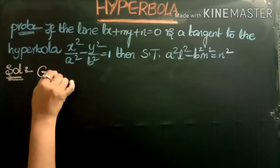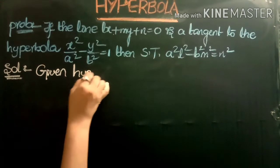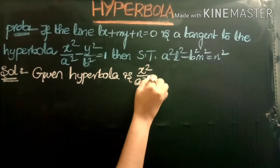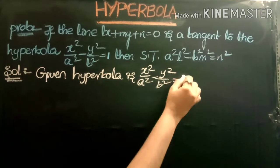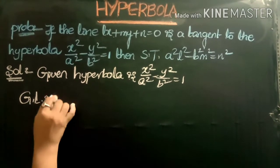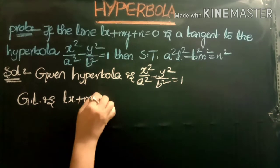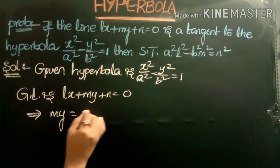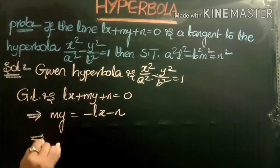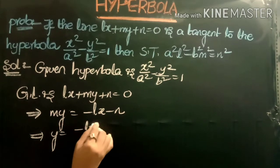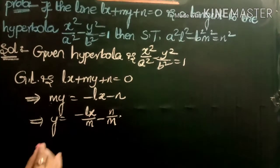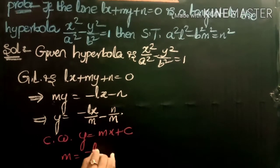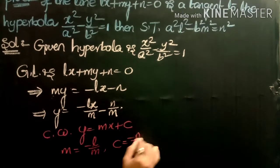The given hyperbola is x squared by a squared minus y squared by b squared equals 1. For the given line lx plus my plus n equals 0, converting to the form y equals mx plus c: my equals minus lx minus n, so y equals minus(l/m)x minus n/m. Comparing with y equals mx plus c, the slope equals minus l/m and c equals minus n/m.